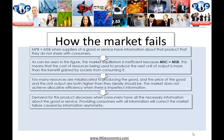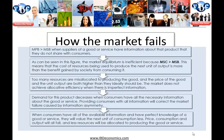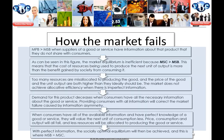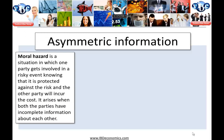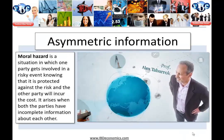The market doesn't achieve allocative efficiency with imperfect information. When consumers are provided with all available information, demand for the product decreases. With perfect knowledge, consumers value the next unit of consumption less — price, consumption, and output fall, and fewer resources are allocated to producing the good or service. With perfect information, the socially optimal equilibrium is achieved, where marginal social benefit equals marginal social cost.